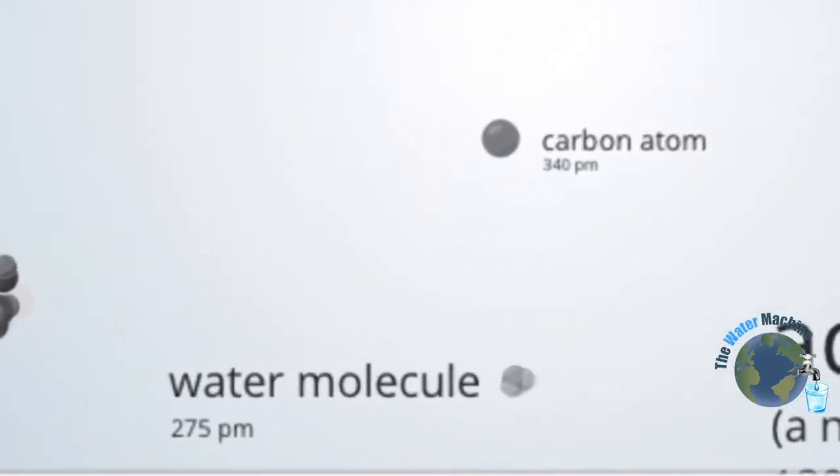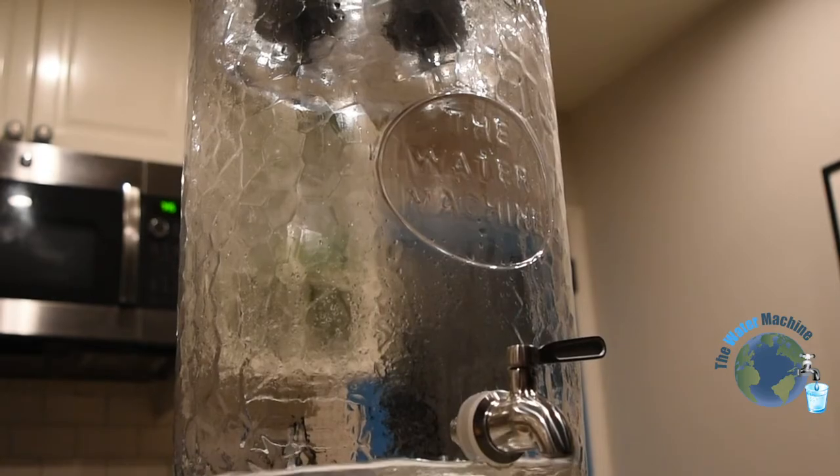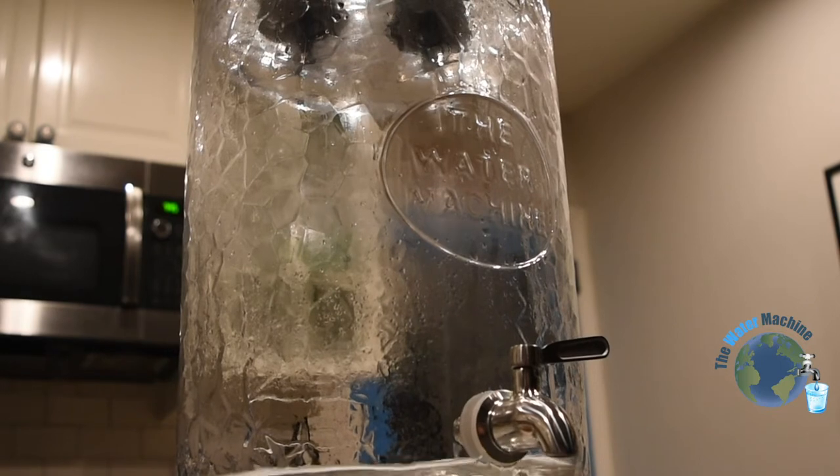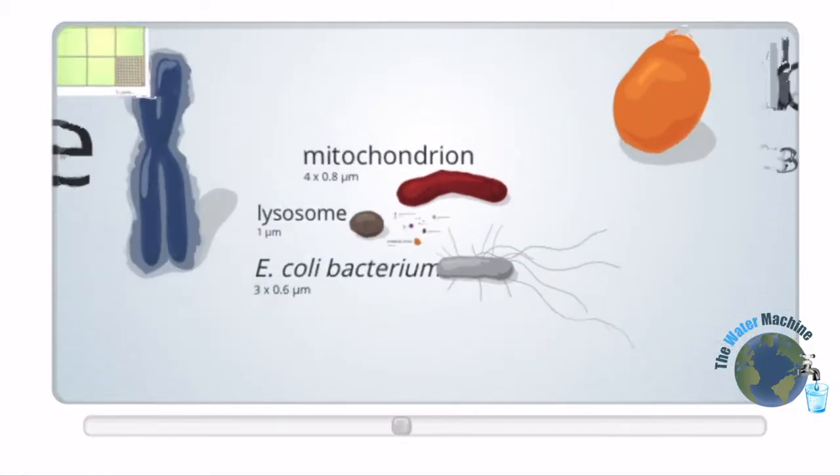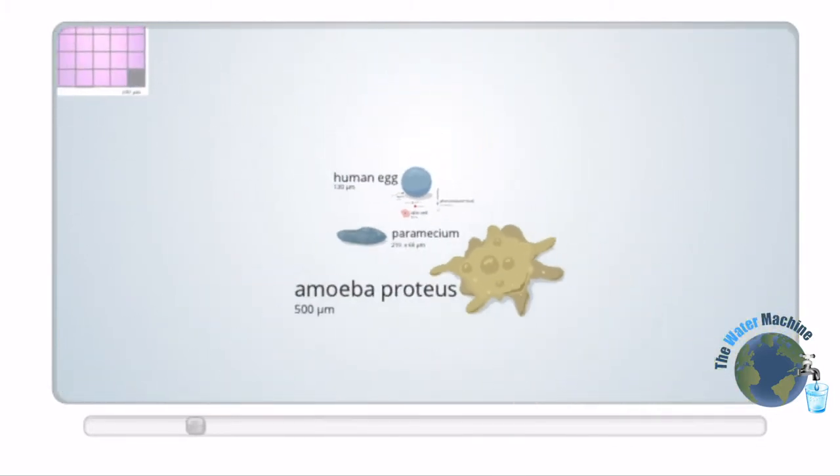So the water molecule is the only thing smaller than the carbon atom. Purified water is the only thing that makes it to the lower chamber of the water machine. And as you can see, all other contaminants are 10 times, 100 times, even thousands of times larger and simply cannot fit through the filter.